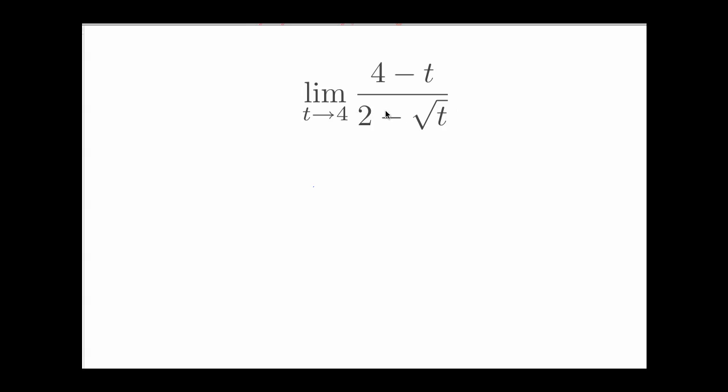As always, let's try to evaluate this limit by first directly substituting to see what we get. So if I put t equals 4 in, I have 4 minus 4 over 2 minus square root of 4. And that, again, as is kind of a theme here, is 0 over 0. And remember, this tells us no information about the limit.